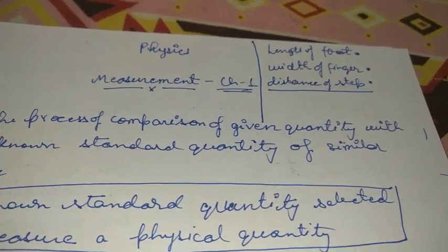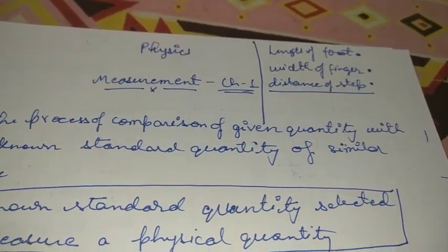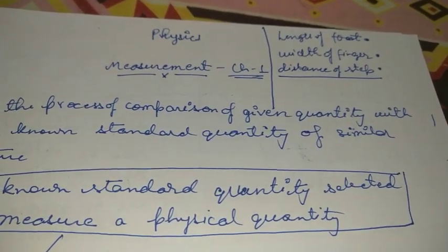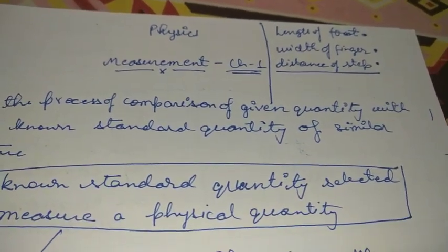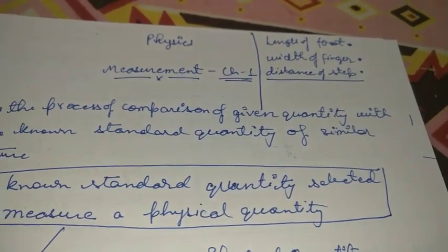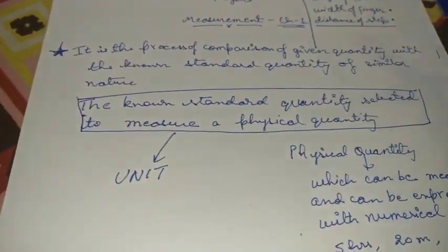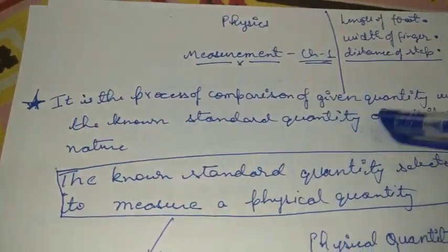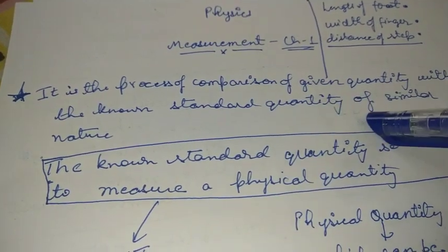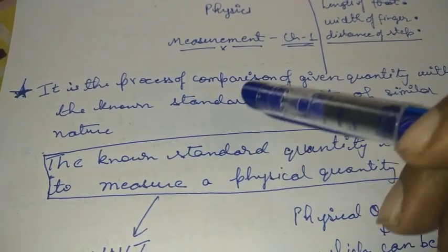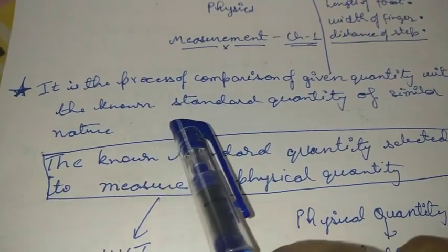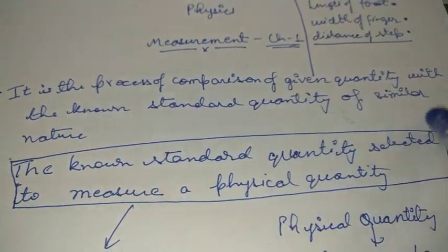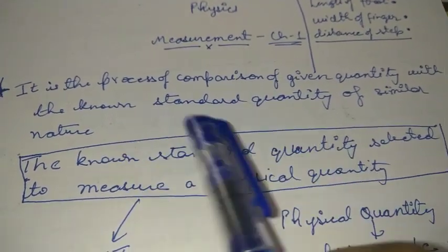That is where the comparison part comes in. How do we be very sure that the measuring quantity is not getting changed? Because we were not having a fixed value to measure. Now in today's era we have a fixed quantity through which we can compare. Measurement is simply the process of comparison of a given quantity with a known standard quantity of a similar nature.